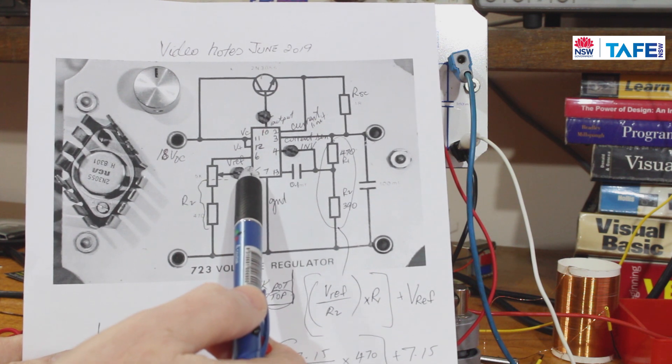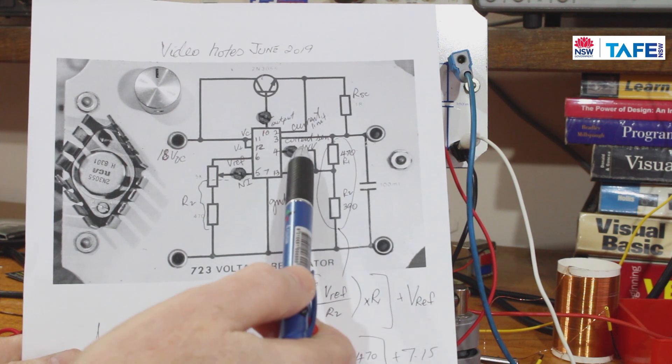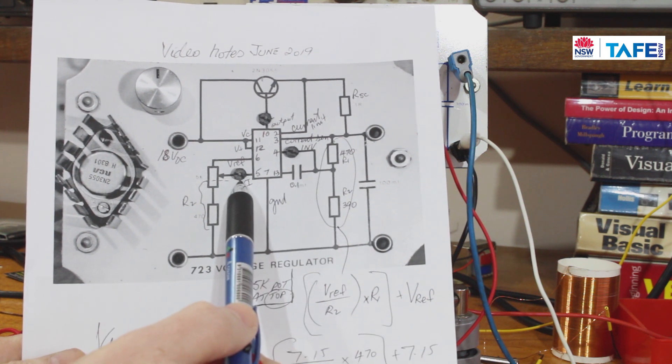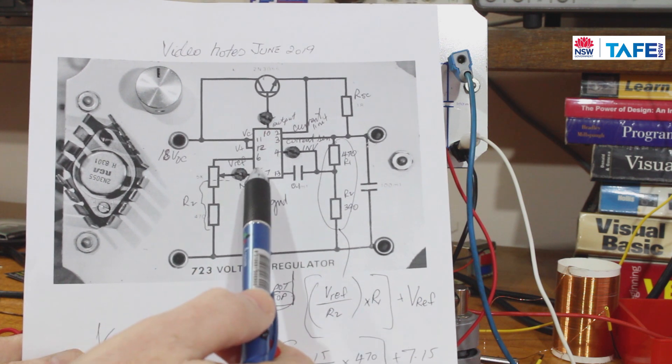The op amp in here is operating differentially, and therefore we're looking at the difference between the inverting input and the non-inverting input in the actual diagram for the LM723.